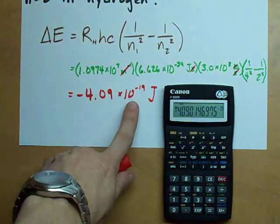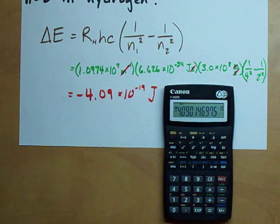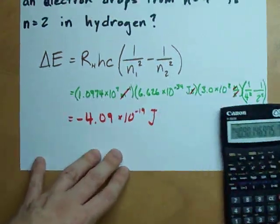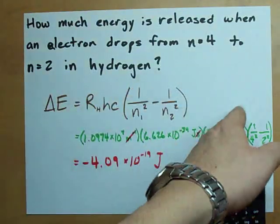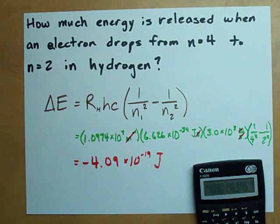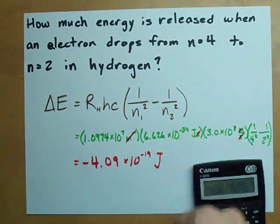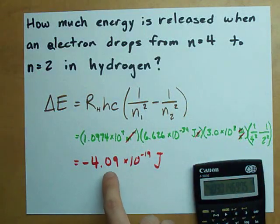That is a typical energy value for a photon, i.e. a package of light. Which implies that when an electron jumps from n equals 4 down to n equals 2, it releases a tiny package of light, a photon, with this energy.